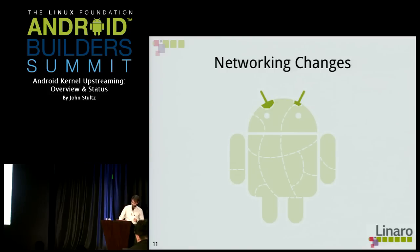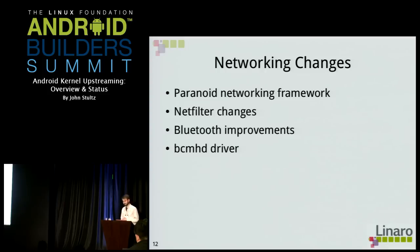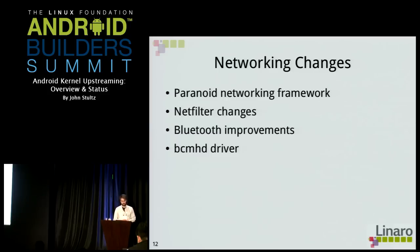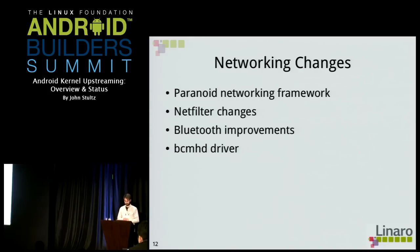For networking, we have the Paranoid Networking Framework — kind of an elegant hack. Since Android applications run as separate users, a special group exists that some applications can be a member of. The kernel checks if the current task is a member of the networking group and allows it access to networking. It's a very small patch — elegant, but not something that could go upstream. We also have netfilter changes for improved accounting of what applications are using data, Bluetooth improvements for error handling and specific Bluetooth modes, and the BCMHD driver — a Wi-Fi driver common on devices that's a vendor OEM drop landing in the Android kernel periodically.